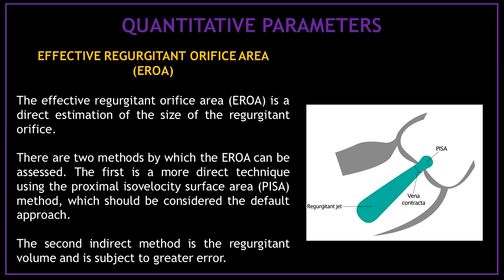Pressure half time is the last semi-quantitative parameter. Now let's start with the quantitative parameters used to assess aortic regurgitation. The first quantitative parameter is the effective regurgitant orifice area, which is a direct estimation of the size of the regurgitant orifice. There are two methods: the first is the proximal isovelocity surface area method, which should be considered the default approach; the second indirect method uses regurgitant volume and is subject to greater error.